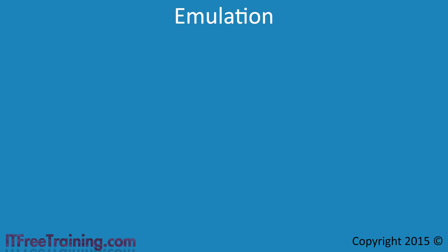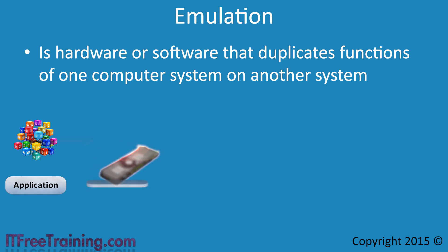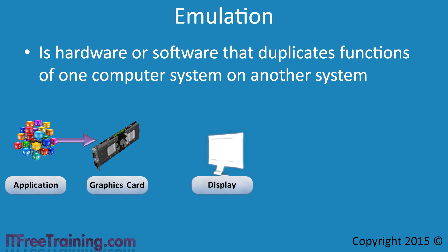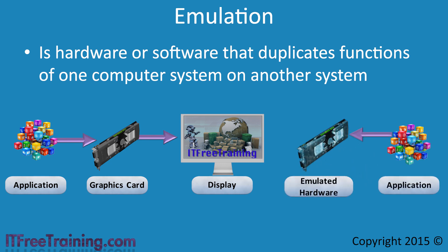To start with, consider a basic definition of emulation — hardware or software that duplicates functions of one computer system on another system. For example, consider an application that wants to display some graphics; it uses a physical graphics card, usually through a device driver, to access the monitor. When you use virtual machines, the hardware is emulated, so the application accesses emulated hardware to reach physical resources like the monitor. The application does not know the difference. This is the biggest advantage of virtualization — it separates the virtual machine from the hardware, making it easy to move a virtual machine from one computer to another.